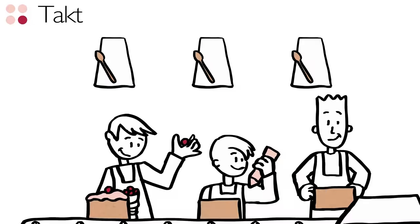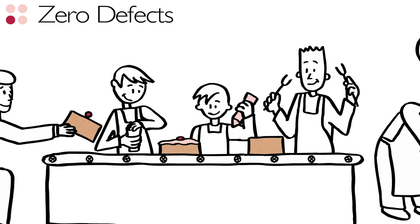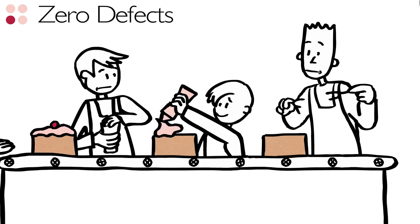And the fourth is zero defects. Mistakes happen, but a Lean company doesn't pass on defects. Mistakes from previous steps must be fixed before going on.